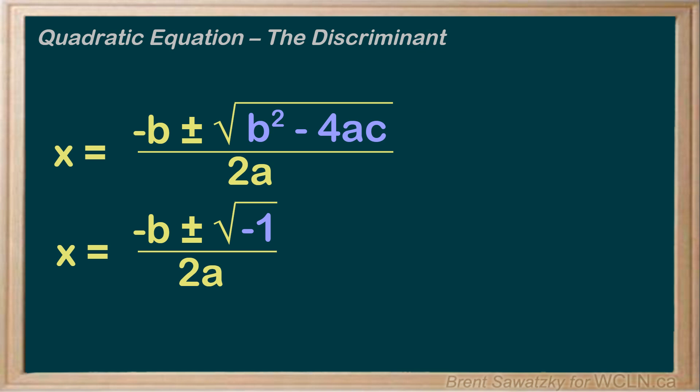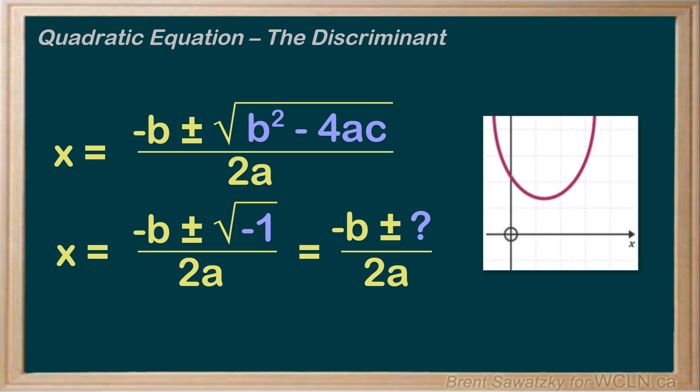So what does that mean to us for our roots? If we can't take the square root of the discriminant, then we're kind of stuck here. There's no way to calculate the root. So there must not exist a root for this one. The graph never crosses the x-axis.